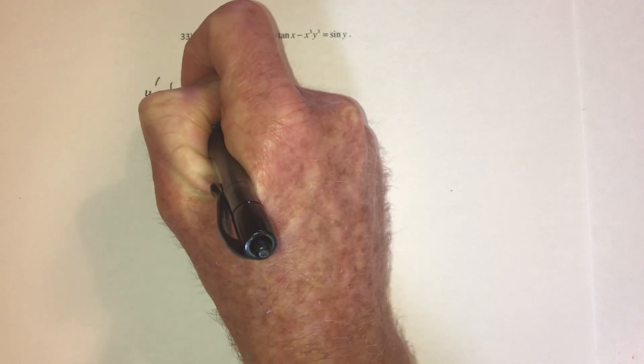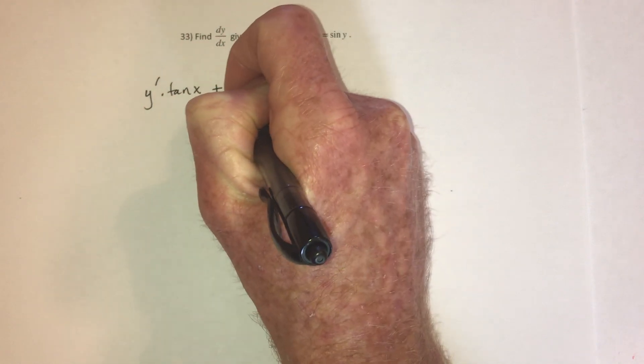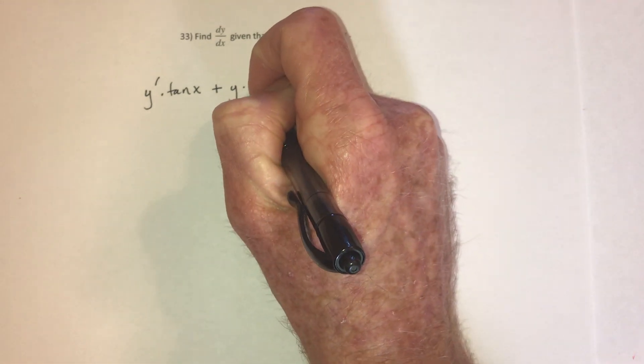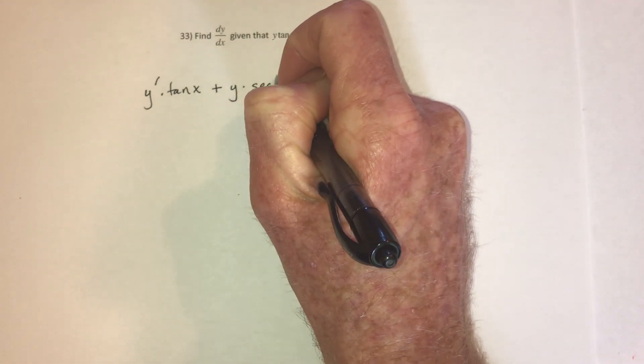Then tangent is left alone. Plus, this time leave y alone and take the derivative of tangent. The derivative of tangent is secant squared.